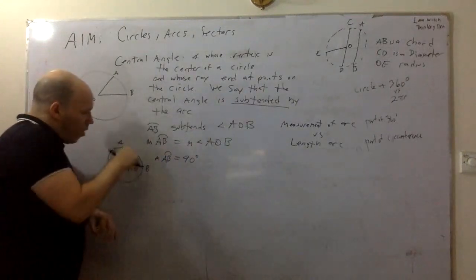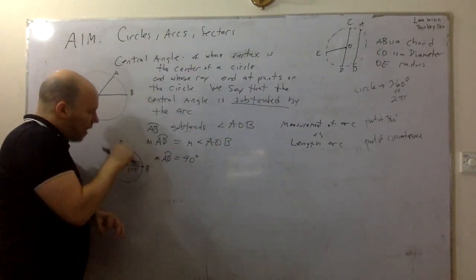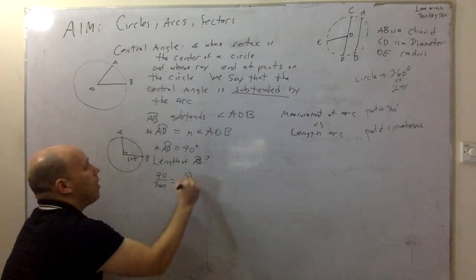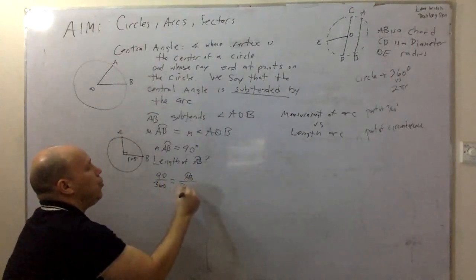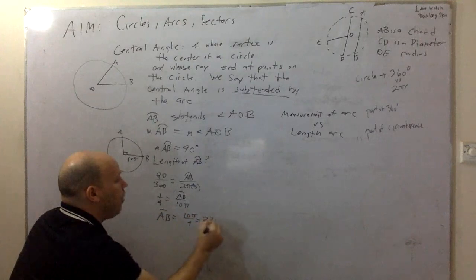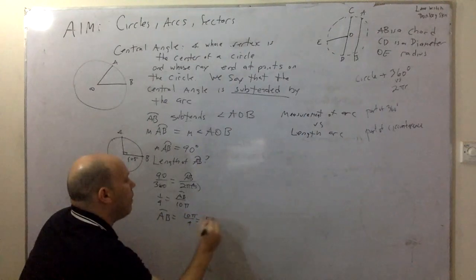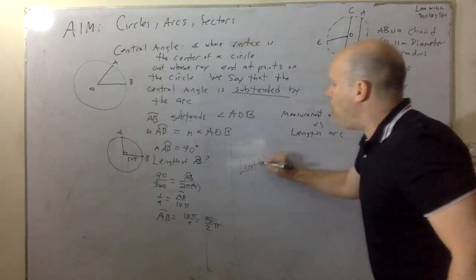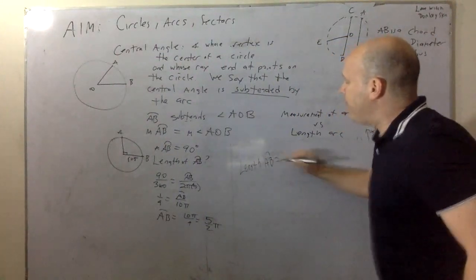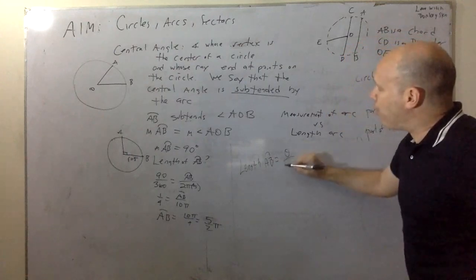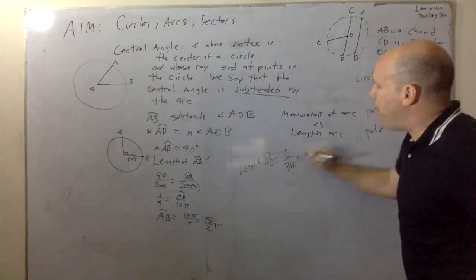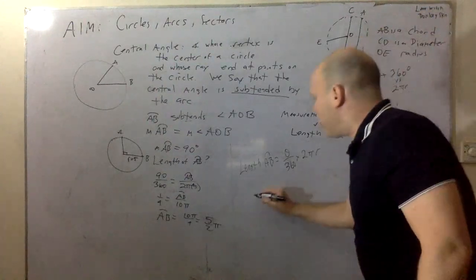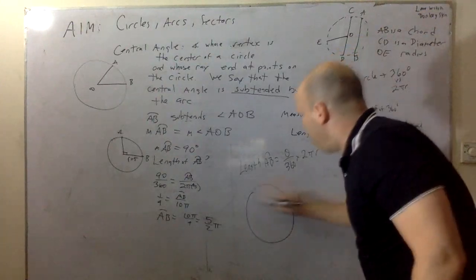Next: diameter. A diameter is a chord that passes through the center. So we can draw a chord where the endpoints are on the circle, but it has to pass through the center to be considered a diameter.